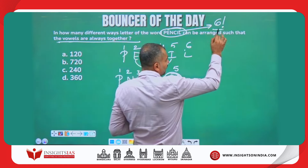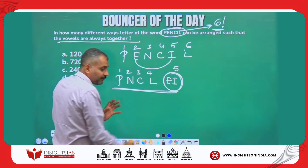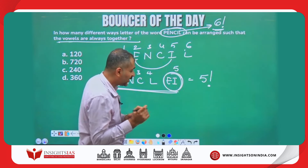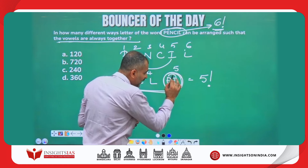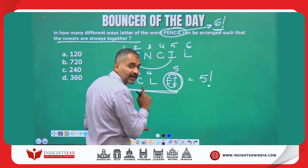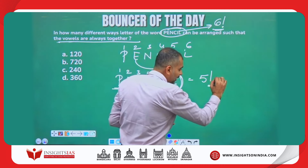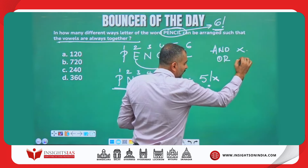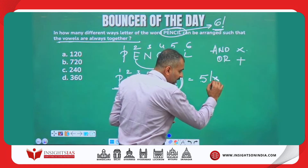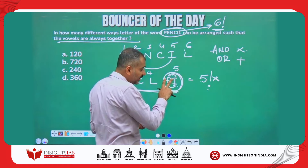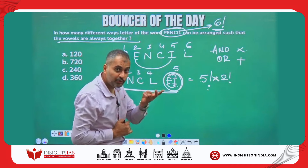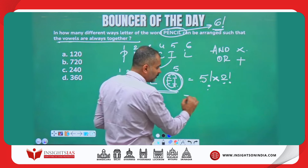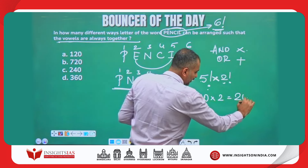Now instead of 6 characters, we have 5 characters, all different, so the arrangement is 5 factorial. But among themselves, E and I can also change positions internally — E can come first or I can come first — that is a different arrangement. Remember: AND means multiplication, OR means addition. So the answer is 5 factorial into 2 factorial. 5 factorial is 120, 2 factorial is 2, giving a total of 240 ways. The answer is C: 240.